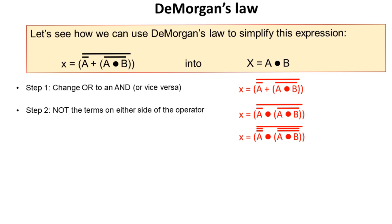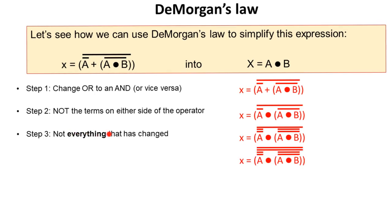Still following the algorithm of DeMorgan's Law, we now NOT the terms on either side of the operator. Well, the terms on either side of the operator are the A and the NOT (A and B). So we've NOTTED those. We now NOT everything that's changed. So that's the ENTIRE expression has changed. So we NOT that over the top.